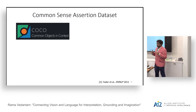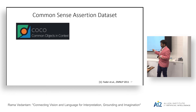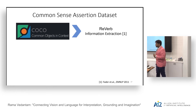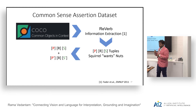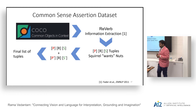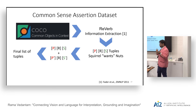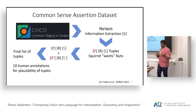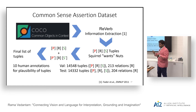We get 10 human annotations for every tuple indicating how plausible it is, giving us a validation and test set of approximately 15,000 tuples with around 200 relations each. To curate a database of concepts we have seen, we sample a relation like 'want,' show a scene to a Mechanical Turk worker, and ask them to illustrate what 'want' means. The worker modifies an initial seed scene to have the concept of wanting, and annotates which is the primary object wanting the secondary object.